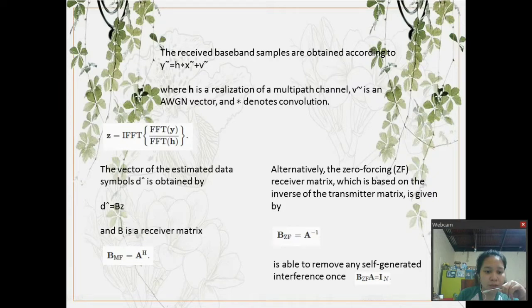Alternatively, the zero forcing or ZF receiver matrix which is based on the inverse of the transmitter matrix is given by B sub ZF equals A raised to negative 1, and is able to remove the self-generated interference once B sub ZF A equals I sub N.